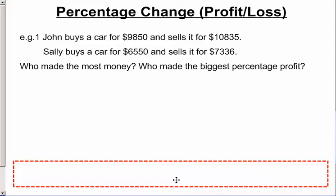So we're going to look at an example here. John buys a car for $9,850 and sells it for $10,835. Sally buys a car for $6,550 and sells it for $7,336. Who made the most money and who made the biggest percentage profit?